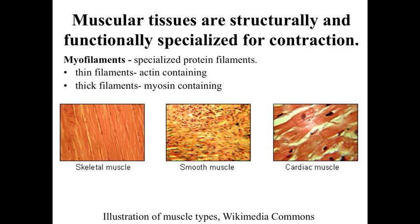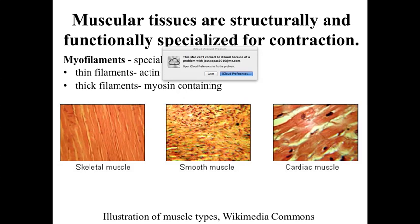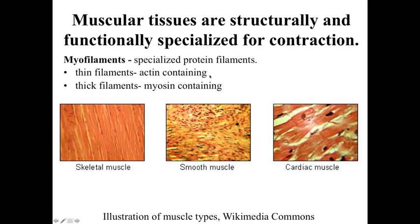The muscular tissues are going to be the fourth and final type of the basic tissue types that we're looking at within the course. We've talked about the epithelial tissues, where we had cells close together forming sheets within the body. We talked about the connective tissues, where we've got cells scattered with extracellular matrix between them, holding the body together. We just finished up with the nervous tissues, which are capable of sending electrical and chemical signals throughout the body for controlling what the body is doing. Now we're going to focus on the last of the tissue types: muscular tissues.